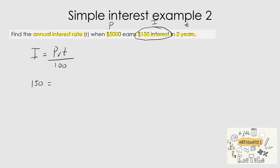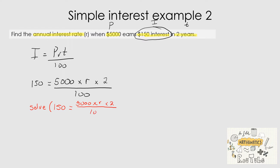Substituting the values: 150 = 5,000 × R × 2 ÷ 100. Using the solve function on the CAS calculator with the expression 150 = 5,000 × R × 2 ÷ 100, solving for R gives us 1.5. Since it's always expressed as a percentage, the annual interest rate is 1.5%.